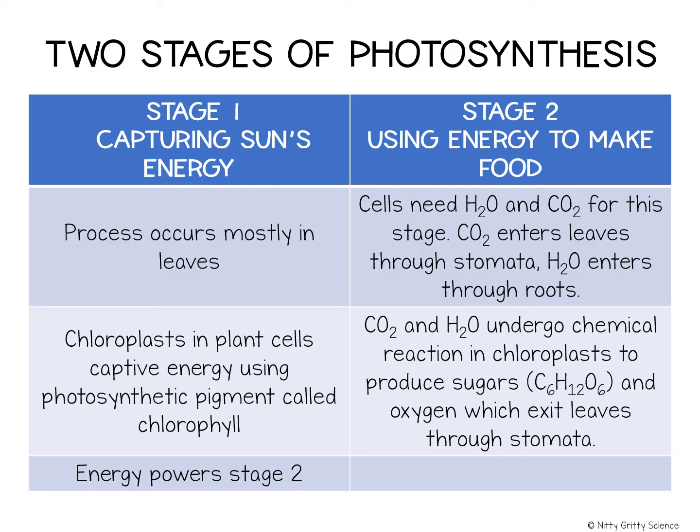These chemical reactions produce sugars, which are a type of carbohydrate. Cells can then use the energy in those sugars to carry out important cell functions. The other product of photosynthesis is oxygen, which exits the leaves through the stomata. In fact, almost all the oxygen in Earth's atmosphere was produced by living things through the process of photosynthesis.